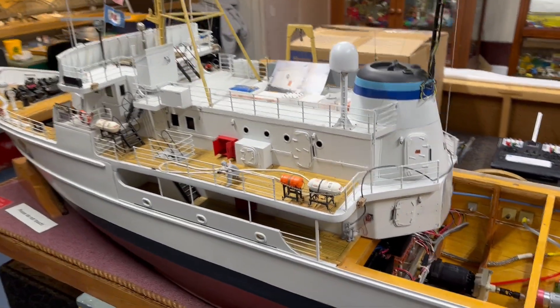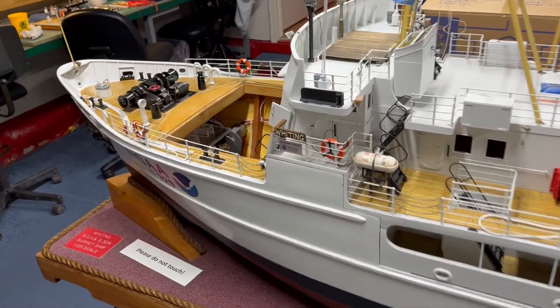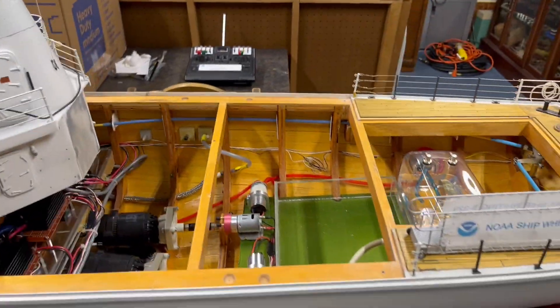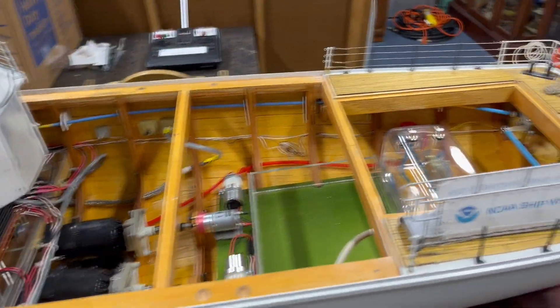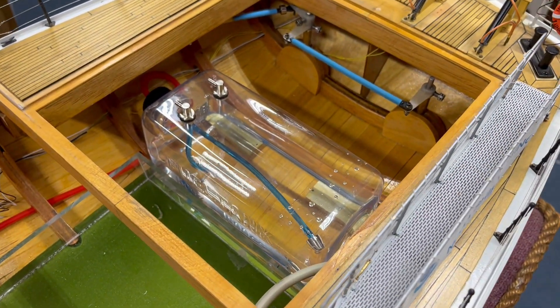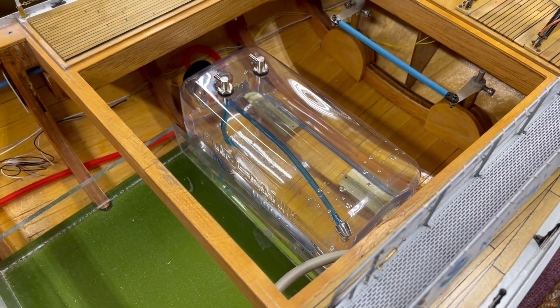Here is the model with the bow hatch removed, the davit section removed, and the stern section removed. You just fill that up with water and you're good to go.